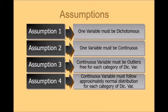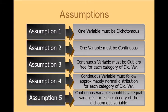And the last assumption is continuous variable should have equal variances for each category of the dichotomous variable. So how you will analyze last three assumptions? For first two assumptions, you already know that you have captured your data for dichotomous variable or continuous variable. To test assumption number three, four and five, you can simply check these assumptions in SPSS.